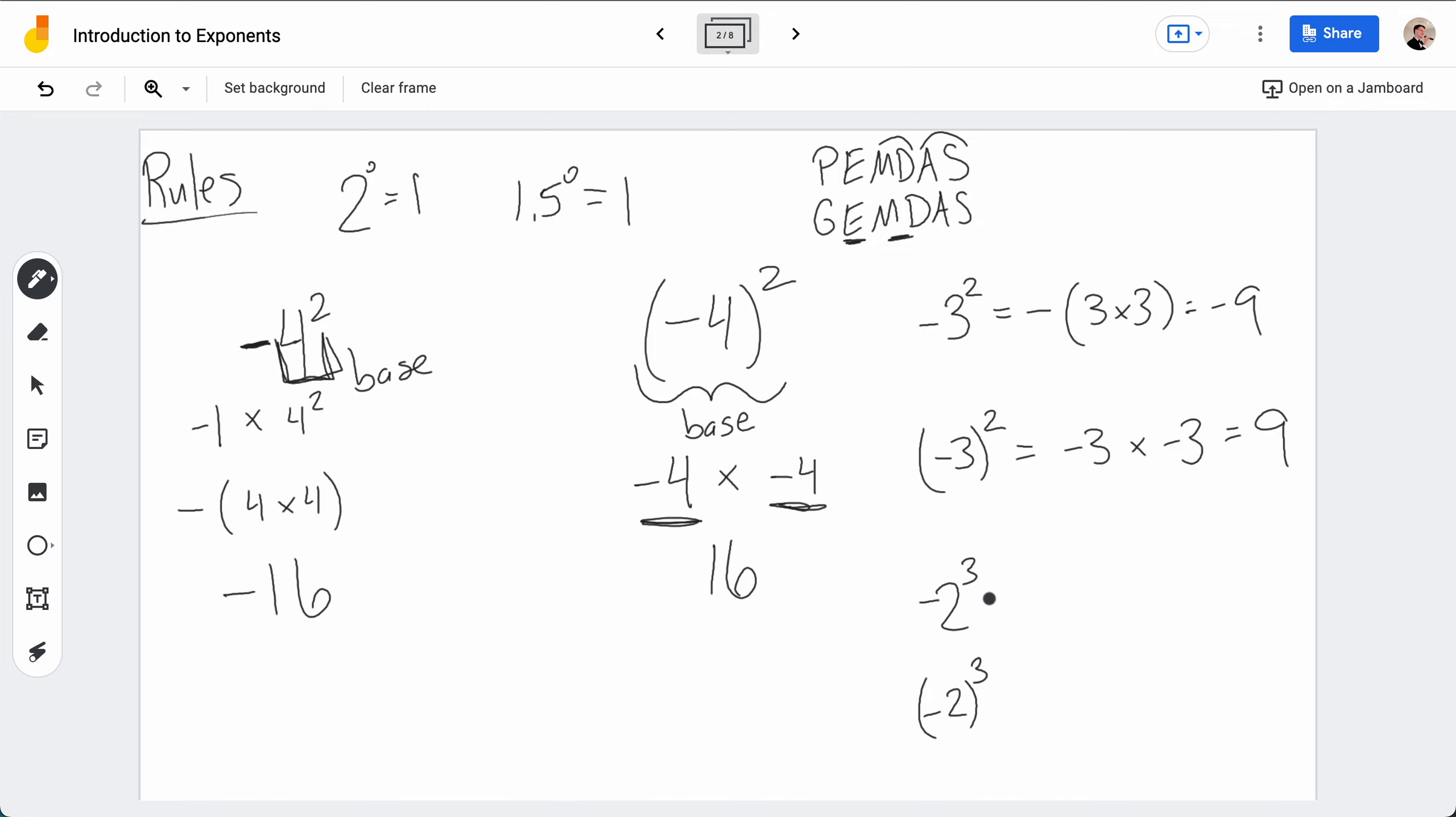And then we go down below to the 2s. So here I have, again, no parentheses, so I'm going to have negative 2 times 2 times 2 times 2, so this gives me negative 8. And then over here, I'm going to get negative 2 times negative 2 times negative 2, because I do have parentheses, so negative 2 is my base. Negative 2 times negative 2 is positive 4. Positive 4 times negative 2 is negative 8. Interesting.